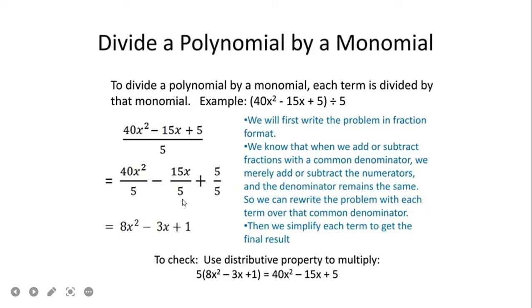So how do we simplify? First, 40 divided by 5 is 8, and then copy x squared. Minus 15 divided by 5 is 3, and then copy x. And 5 divided by 5 is 1. So our answer here is 8x squared minus 3x plus 1.